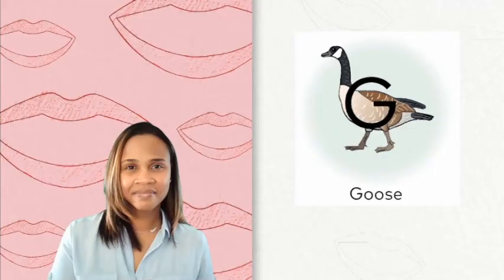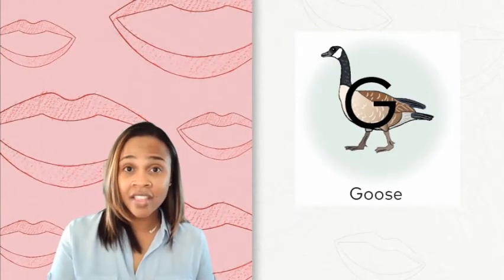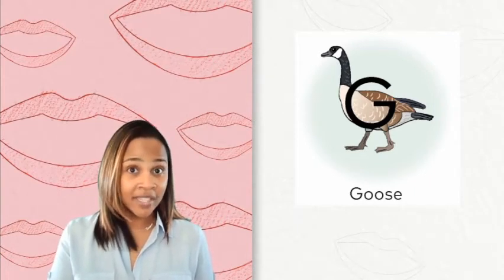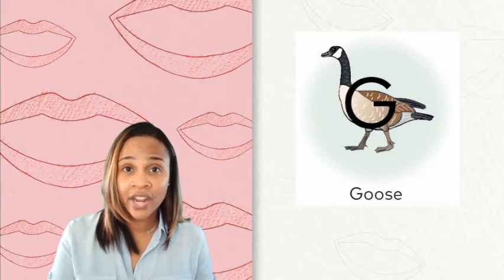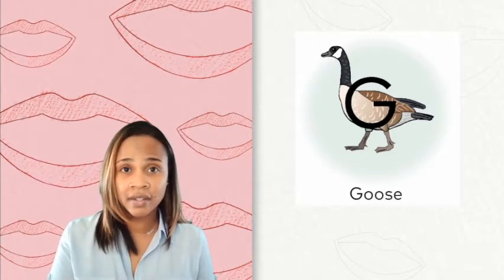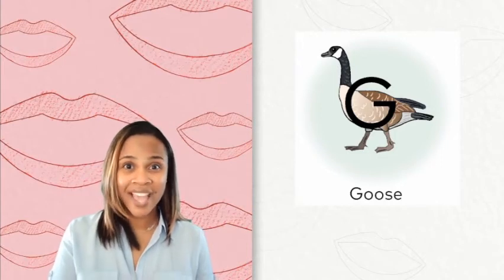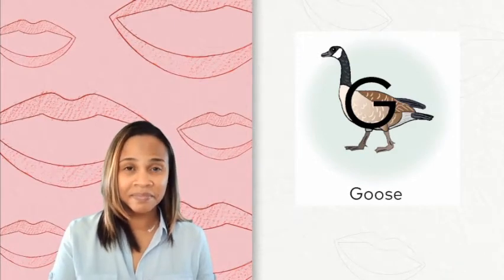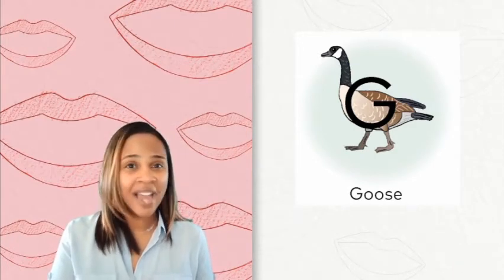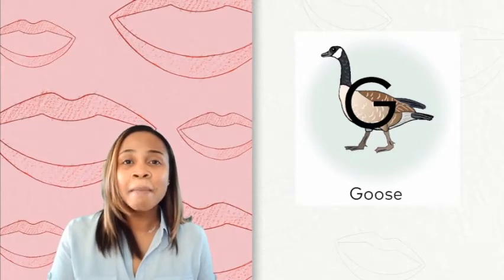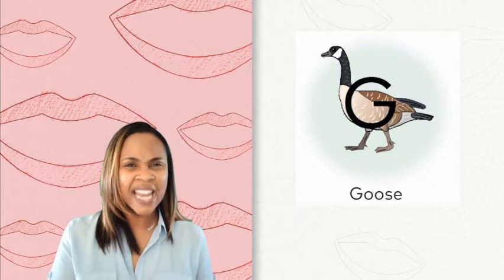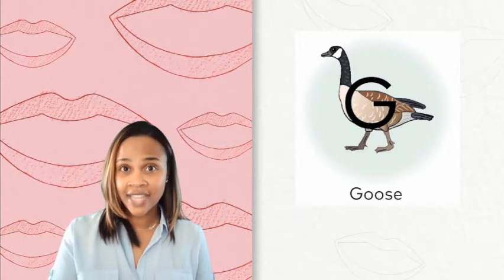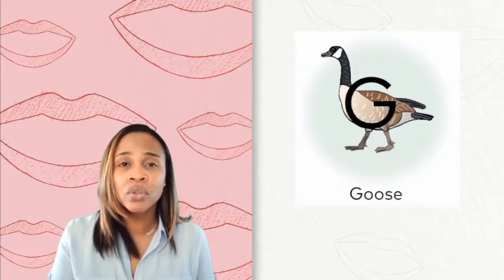We have been working on the key words for the letters G and I. Watch what my mouth does when I say the key word for the letter G. Goose. You say it. What did you notice about my lips? My lips were not closed — they were open. My lips were slightly open and I can feel the vibration of the G sound coming from my throat. Goose.